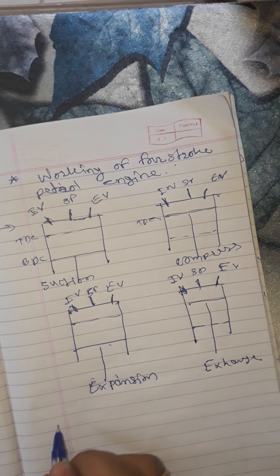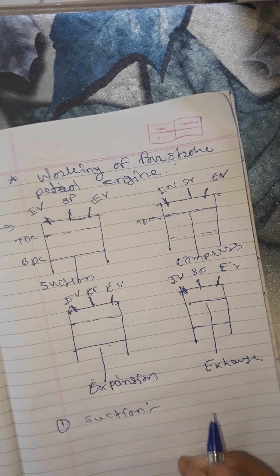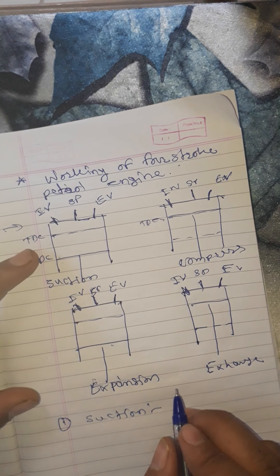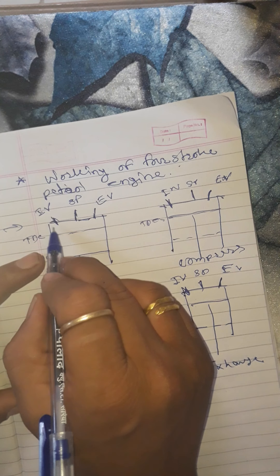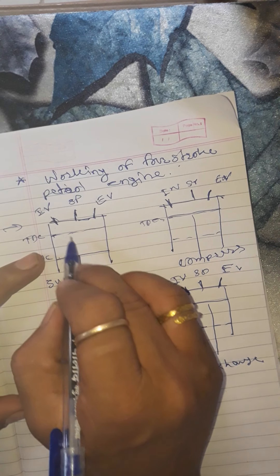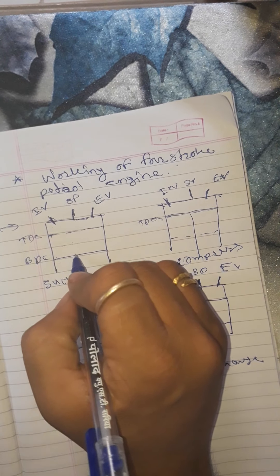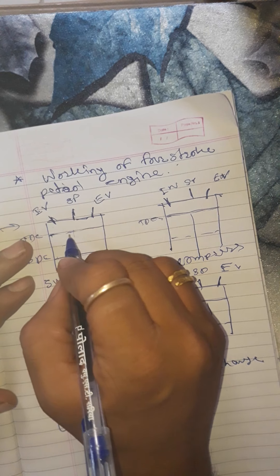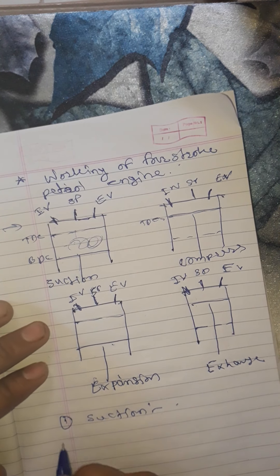First stroke — suction stroke: the piston moves from TDC to BDC. At this time, the inlet valve is open and the exhaust valve is closed, so the charge (air-fuel mixture) enters into the cylinder.